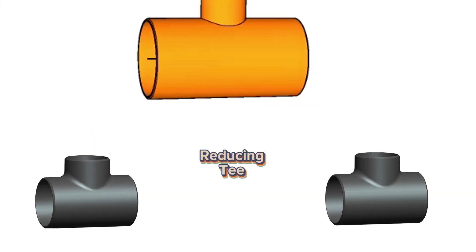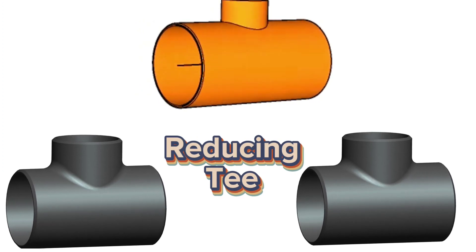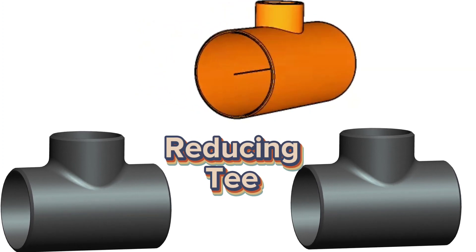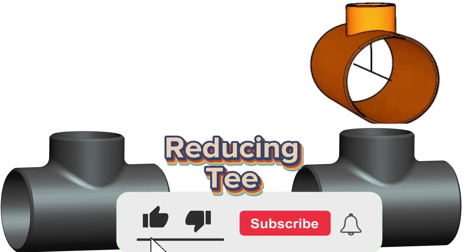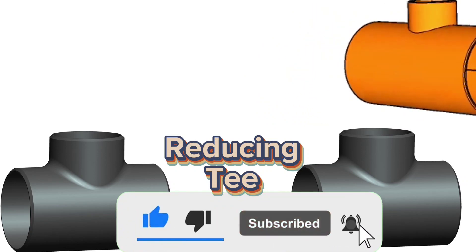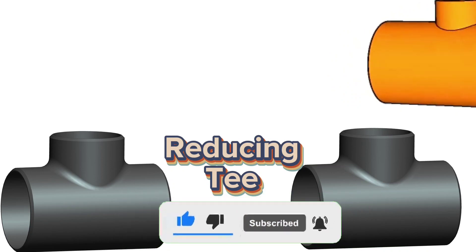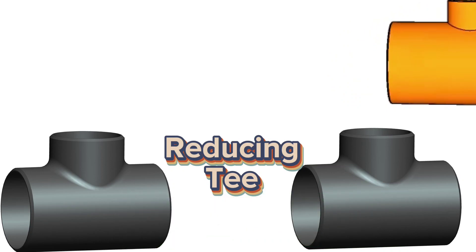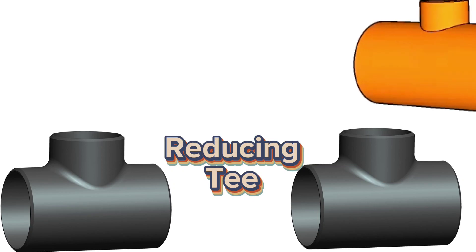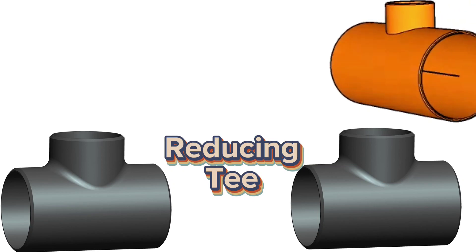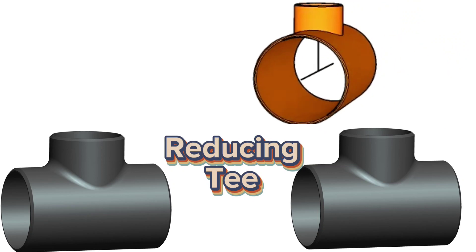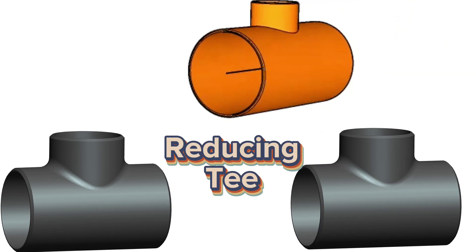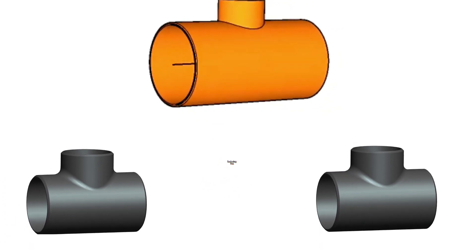Reducing tees are used to connect pipes where the branched pipes may vary — at any angle like 90 or 45 degrees — or where one or two of the tee outlets will be of smaller diameter than the other. The difference between a tee and a reducing tee: the equal or straight tee is used when the branch has the same diameter as the run pipe, while the reducing tee is used when the branch has a smaller diameter than the run pipe.